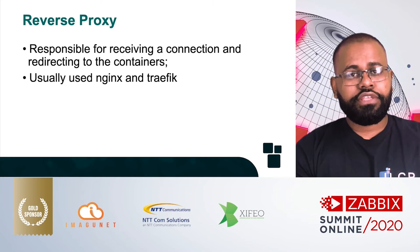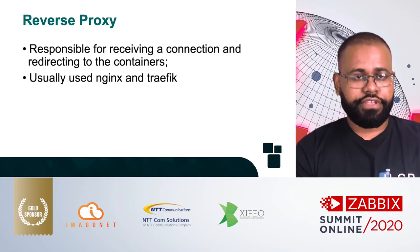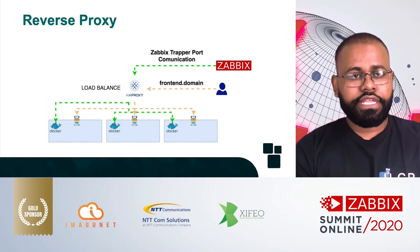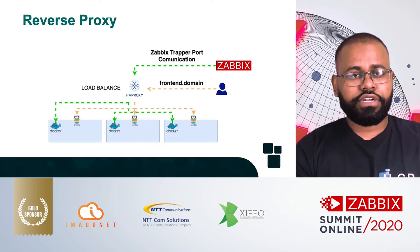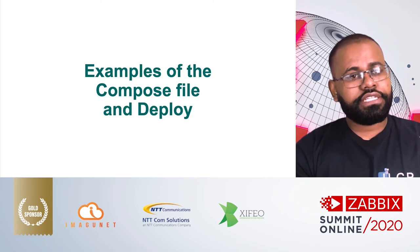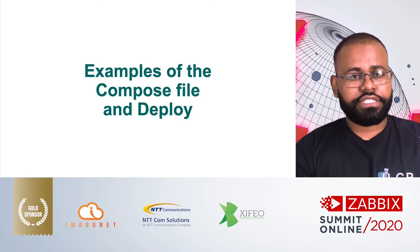Another essential component of this architecture is the reverse proxy. It is responsible for receiving HTTP and HTTPS connections, identifying the destination address, and routing to the responsible containers. It also does load balancing in the case of multiple replicas. The more commonly used reverse proxies are NGINX and Traefik. In this example, we have three containers running Traefik, one on each Docker host. After it receives the connection from HAProxy, it searches for the destination container and sends the package to it.